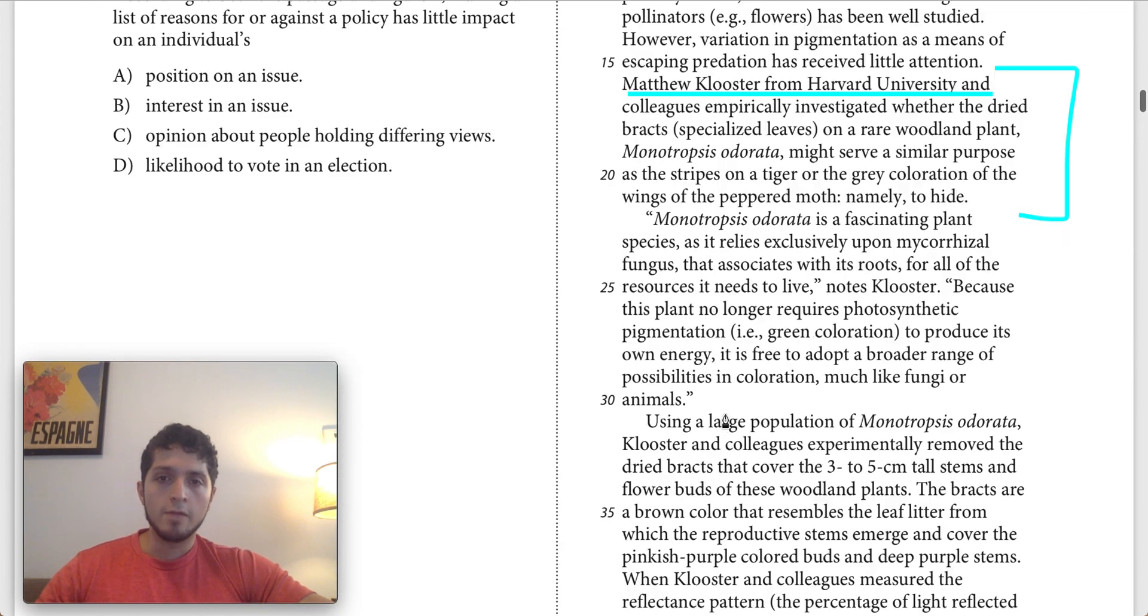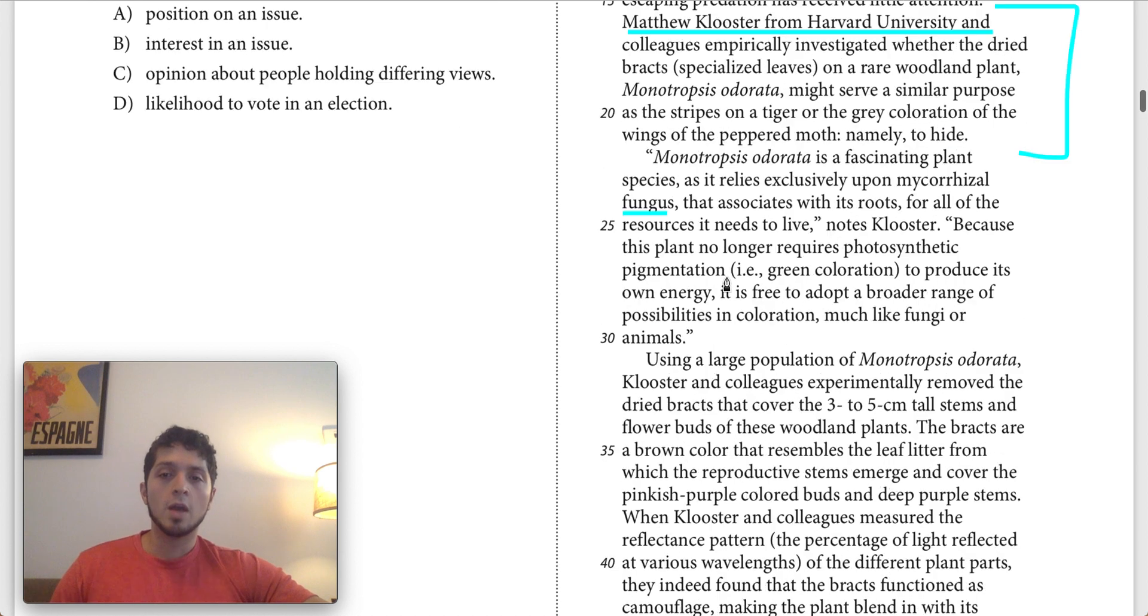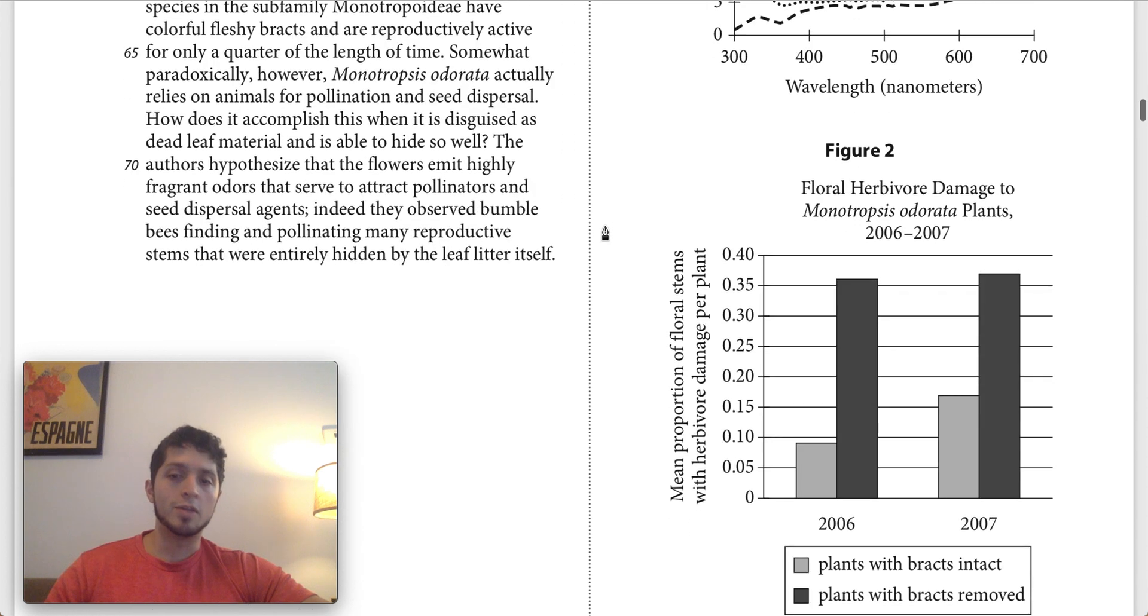Then we have lines 22 through 25. Monotroposis odorata is a fascinating plant species as it relies exclusively upon this fungus that associates with its roots for all of the resources it needs to live, notes Klooster. This is telling us about the nutrients of a single plant, not really about many plants, but it's in the right ballpark. So for now, I would just keep it.